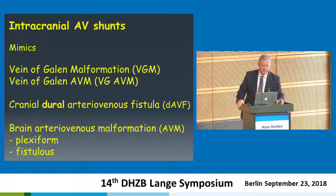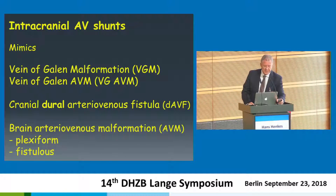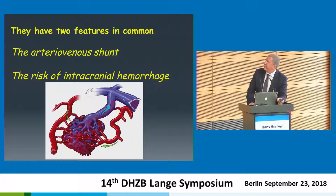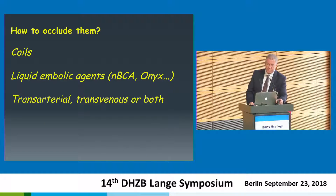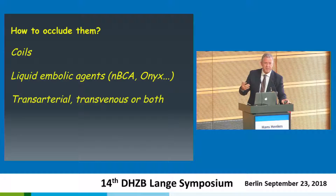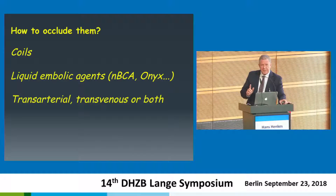I will briefly touch on vein of Galen malformations, vein of Galen AV malformations, cranial dural fistulas, and intracranial brain arteriovenous malformations — both plexiform and fistulas. All these conditions have two things in common: there is a shunt between arteries and veins, and this shunt and its sequelae may cause intracranial hemorrhage. The occlusion is technically relatively simple — you put either coils, glue, or any other liquid embolic agent. The secret is how you're going to do it, and I will show you one out of many tricks.